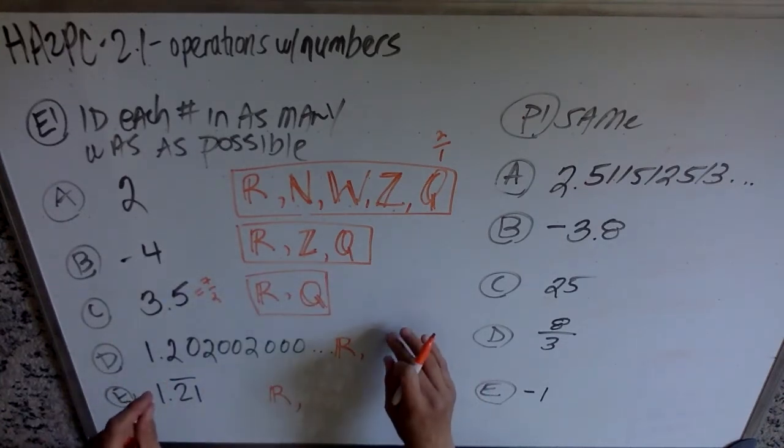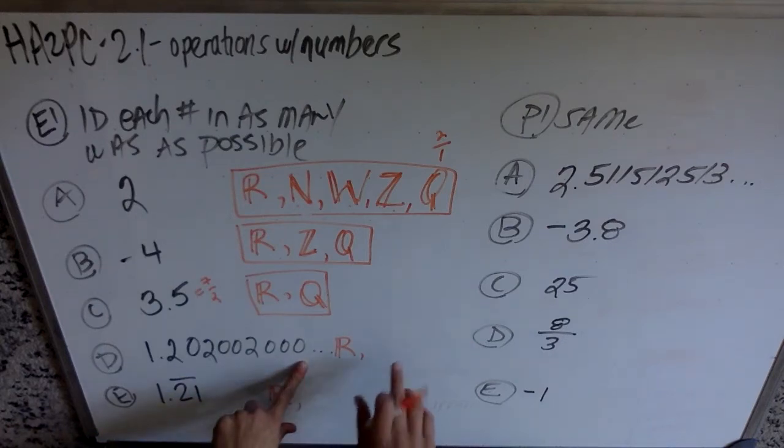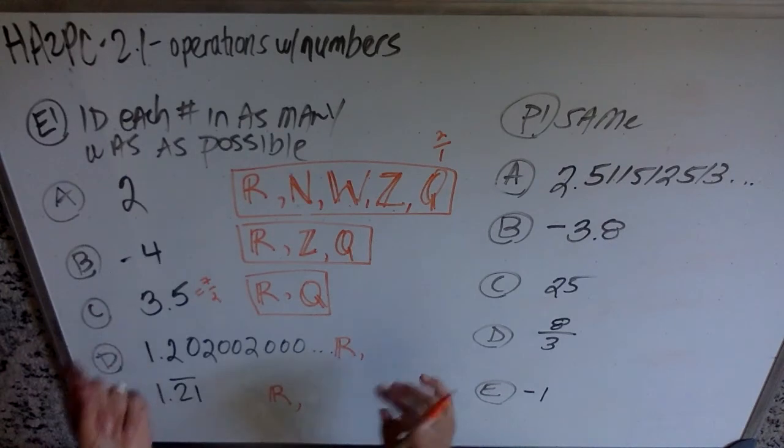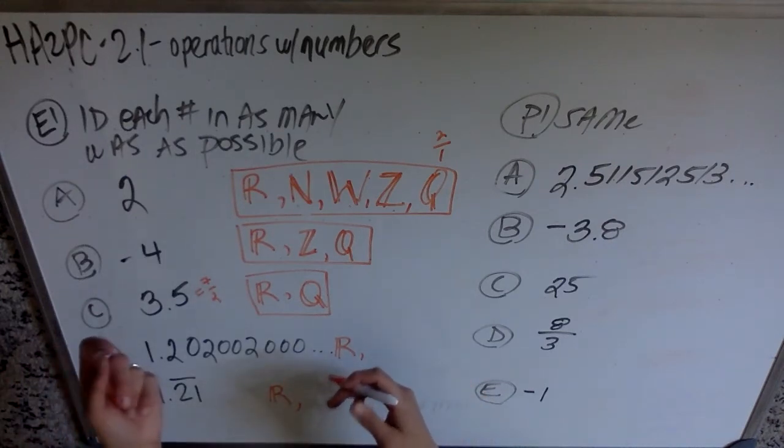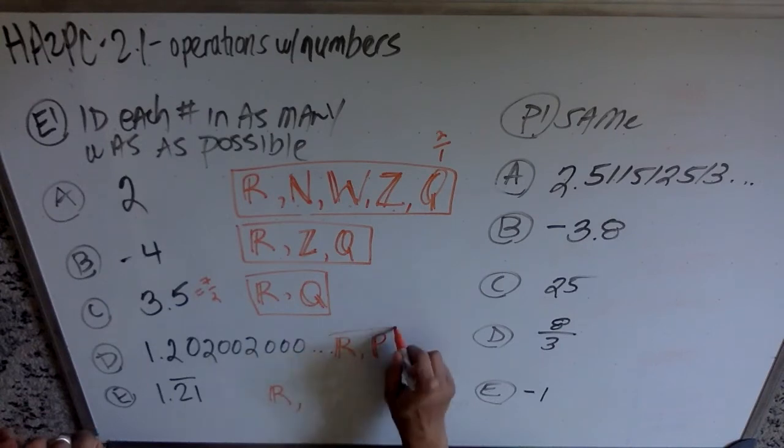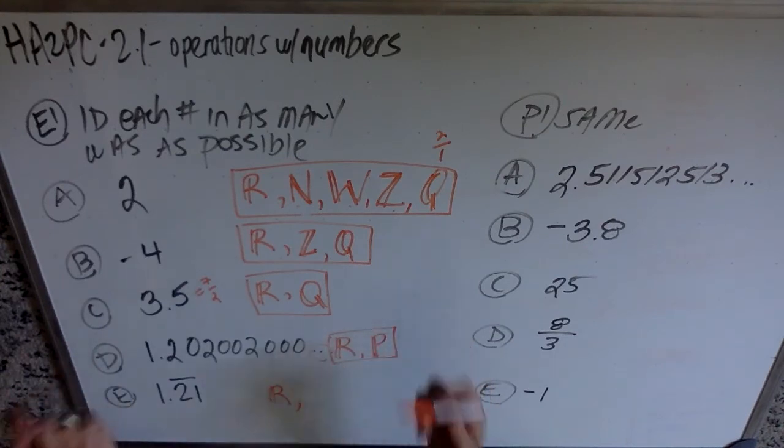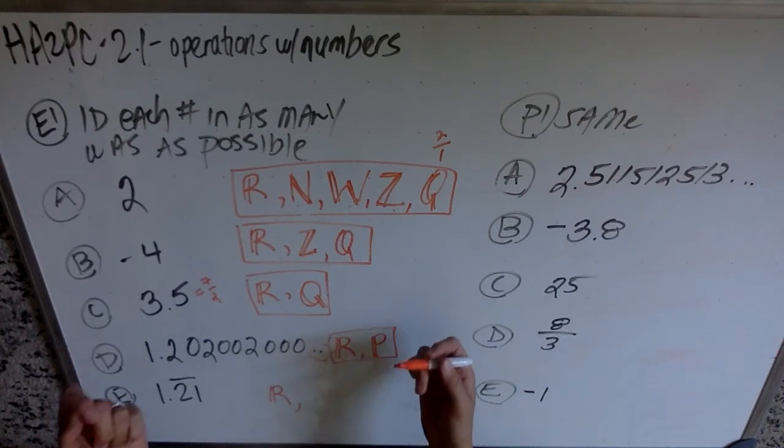Just because this thing is predictable, like, I can guess what the next set of numbers are. I have 1.2020020002000. I'm guessing the next number would be 2 and then 4 zeros, and then 2 and then 5 zeros. Just because I can guess what's going to happen doesn't mean that it's the same as repeating. This is going to be one of those irrational numbers. It's not terminating, because the dot dot dot means it goes on forever, and it's not repeating. It does have a pattern, but pattern and repeating are not necessarily the same thing.